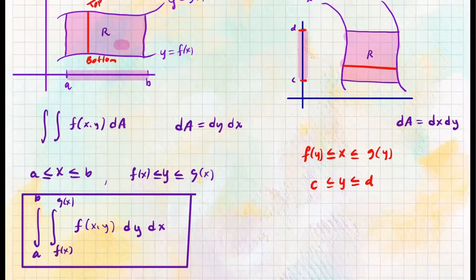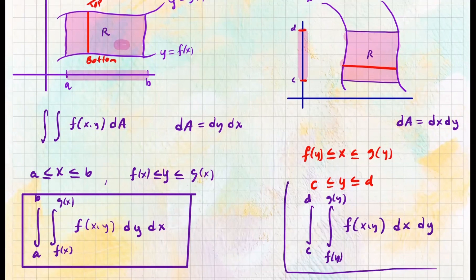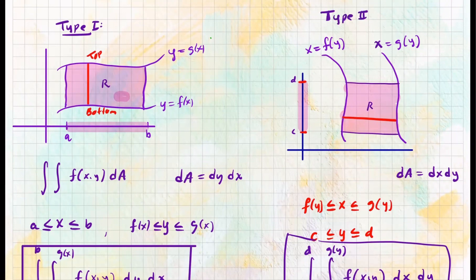And y will range from the two numbers c to d, so those are the bounds for integration. We set up two integrals: the inner integral has functions f of y to g of y expressed in terms of y, and the outer layer goes from c to d — those are constants. We're integrating the surface f of x, y — doing dx first, then dy. That is the setup if your region is bounded by two curves, and you make a horizontal line parallel to the x-axis. This is called a type 2 region.